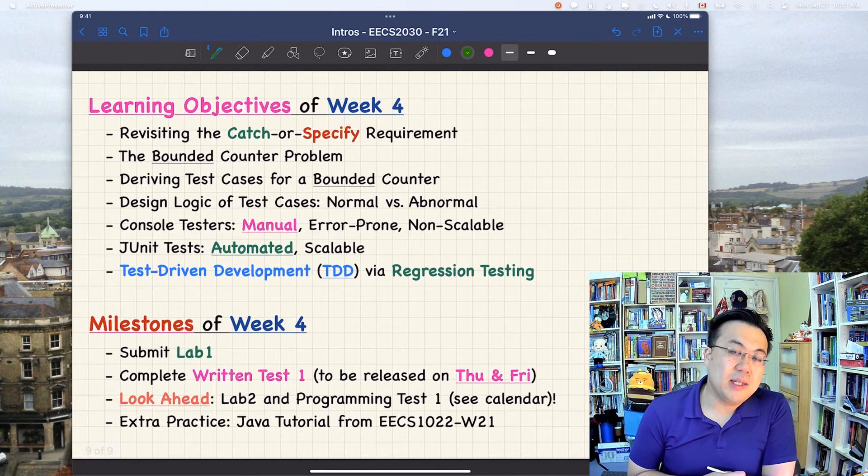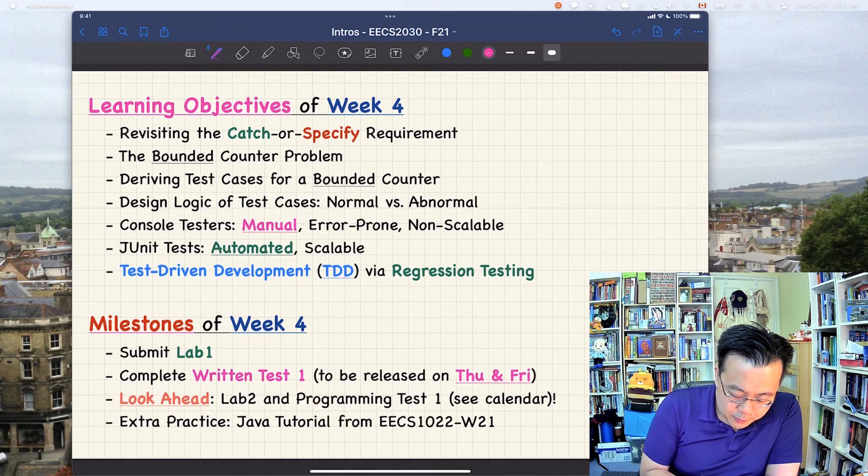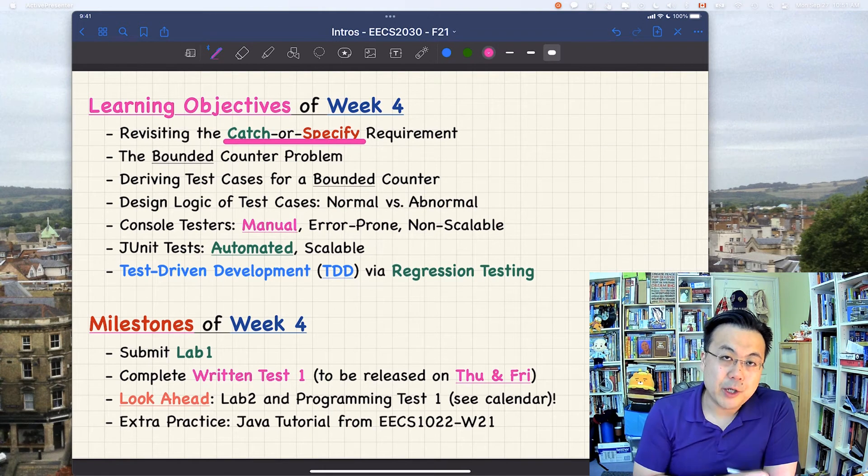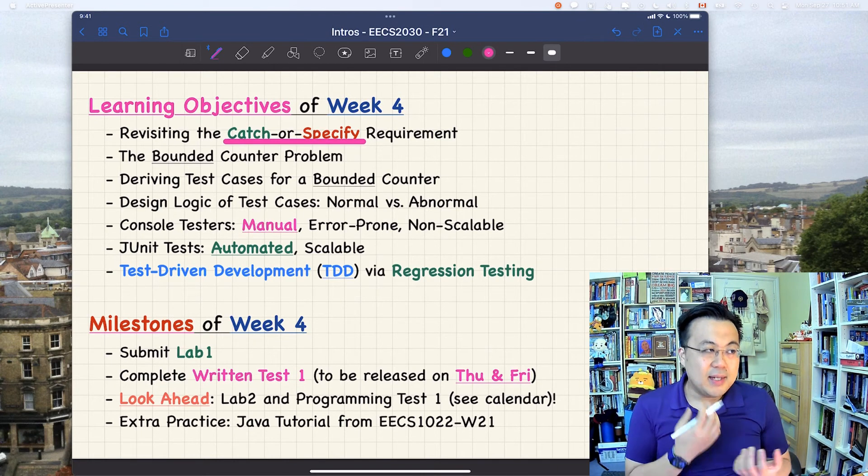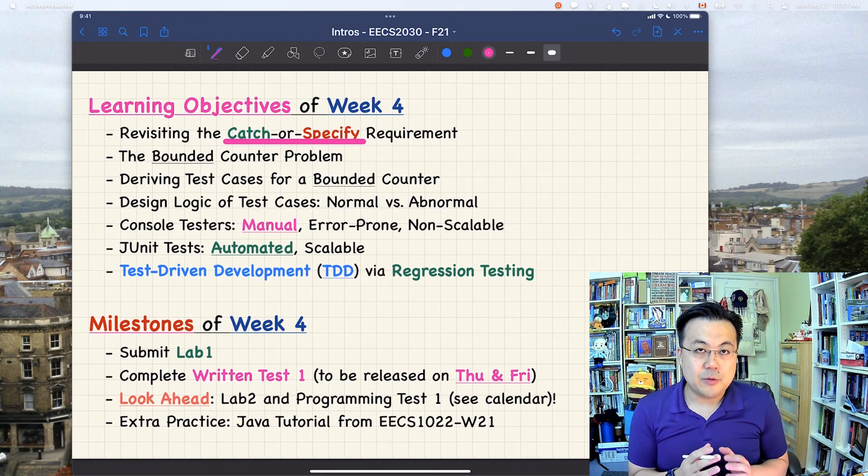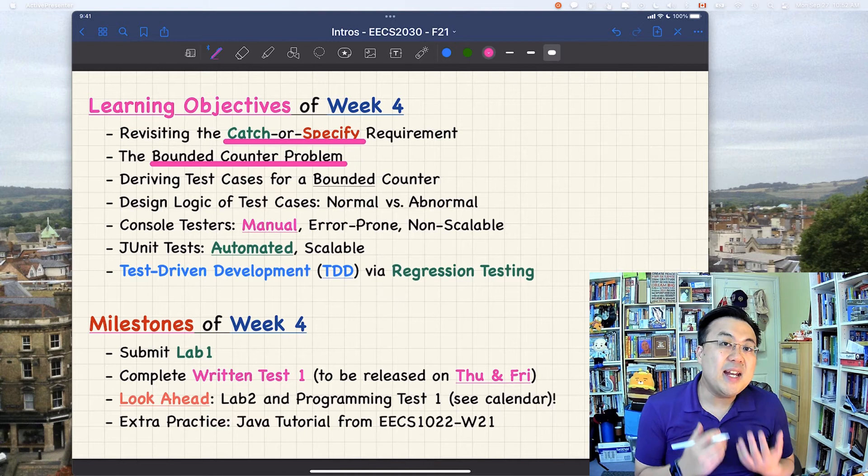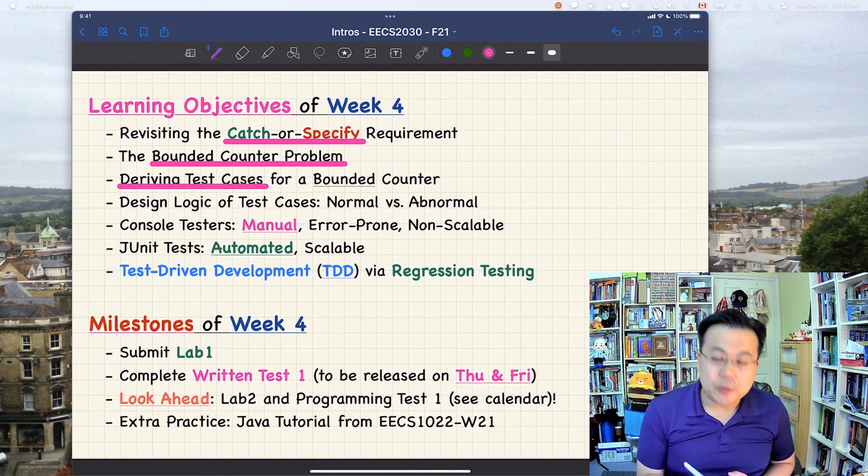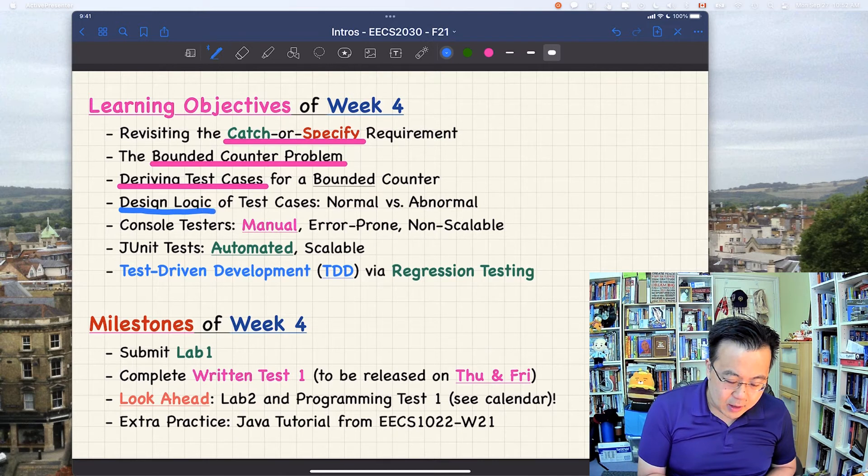And then let's talk about the learning objectives very quickly. We are going to revisit the catch or specify requirements, which we spoke about last week in lecture 2A. So you just have to recall what it really meant and then you have to put it into practice. And this time, I'm also showing you how you can satisfy the catch or specify requirements in the context of unit testing using JUnits, just to reinforce your understanding. And we'll talk about the bounded counter problem, which is a very simple problem, but I think we can illustrate many ideas using this simple example. Especially how you can derive test cases using a so-called finite state machine with state transitions.